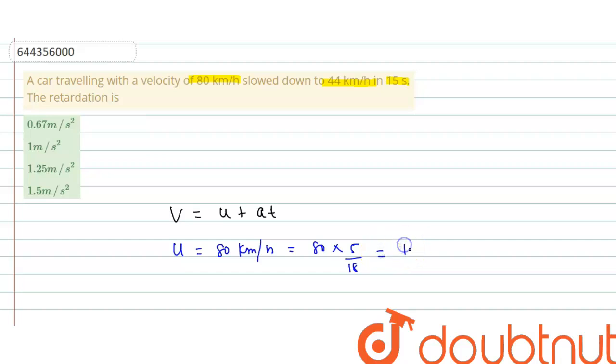And final velocity is 44 km per hour, which is equal to 44 times 5 by 18. And this is equal to 12.22 meter per second.